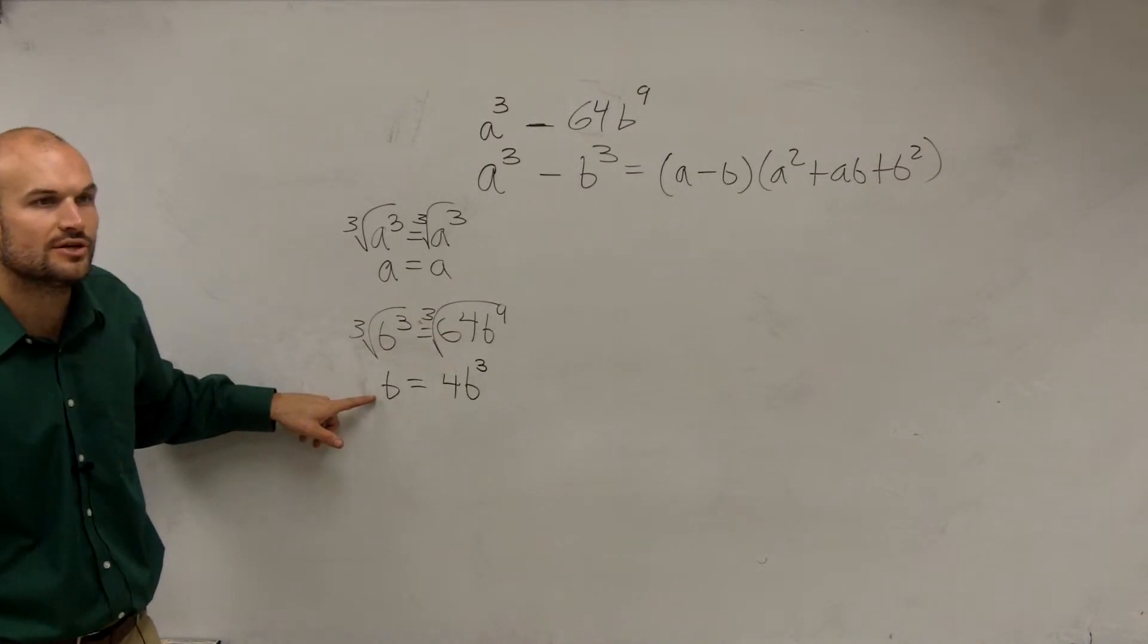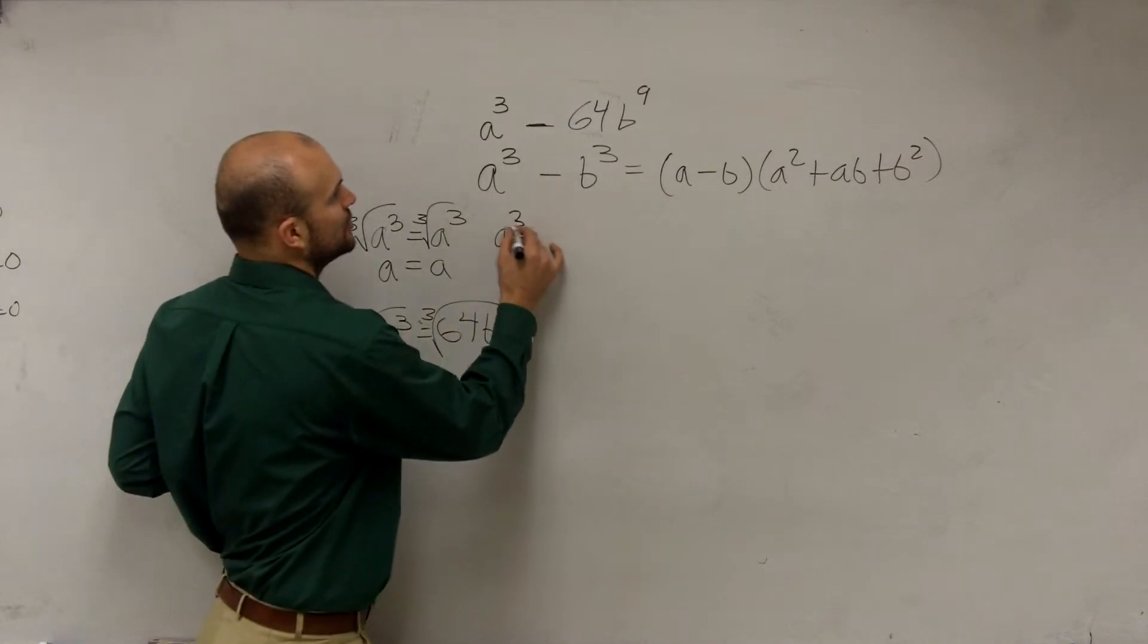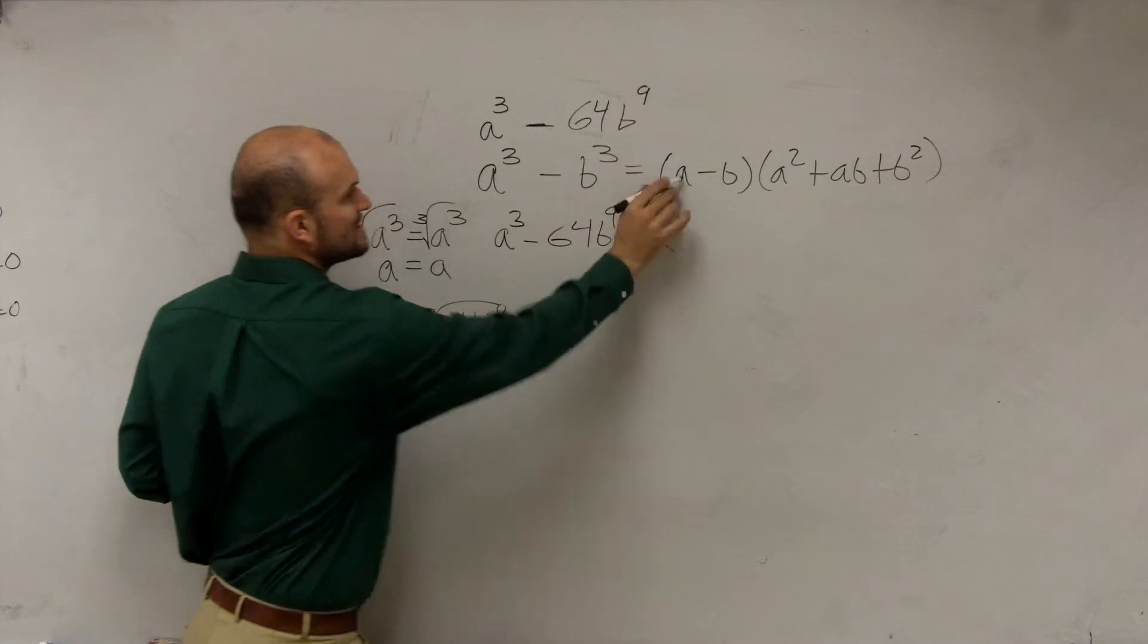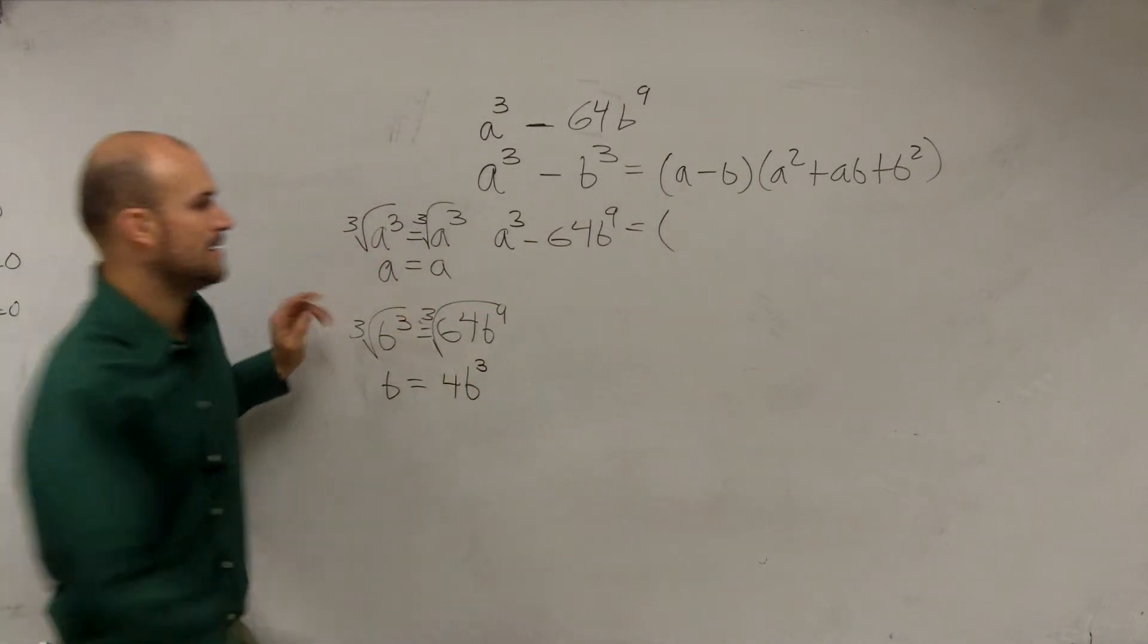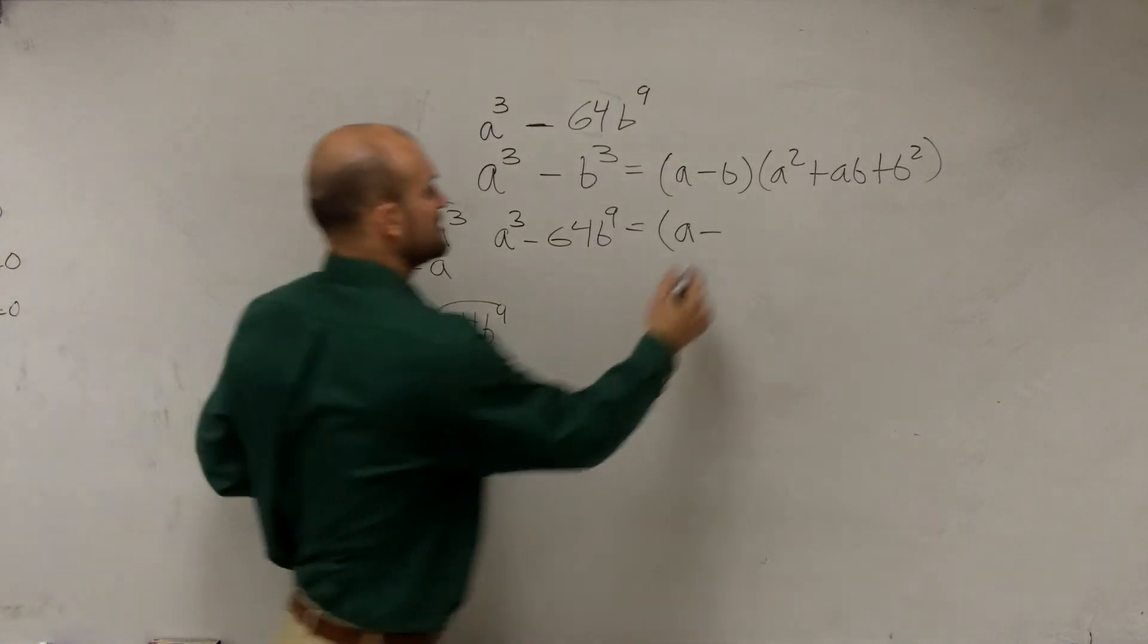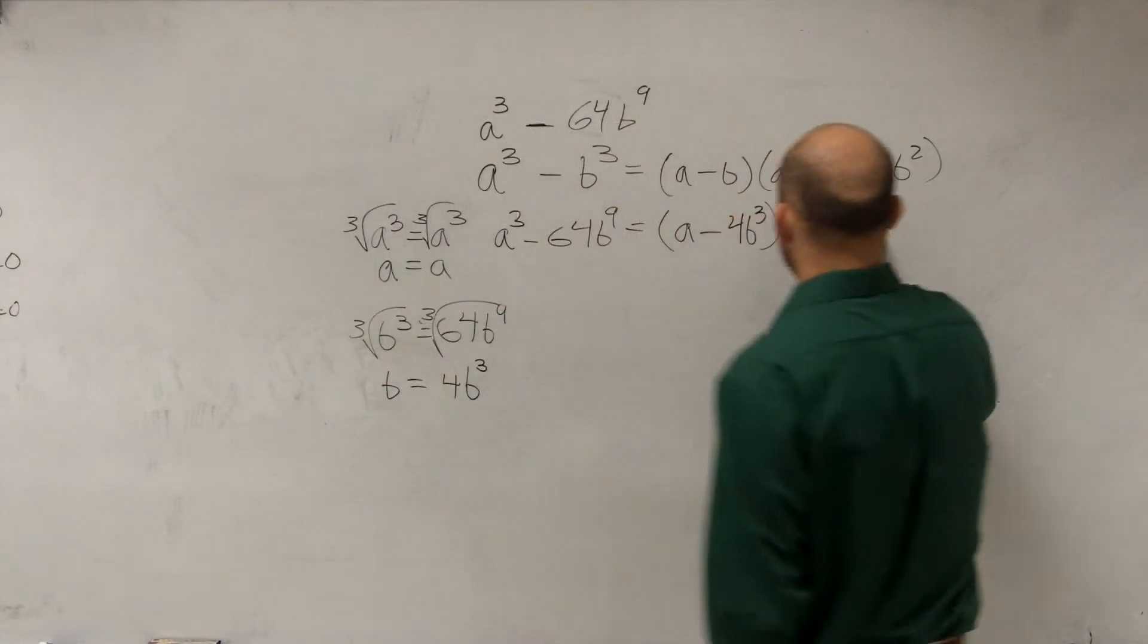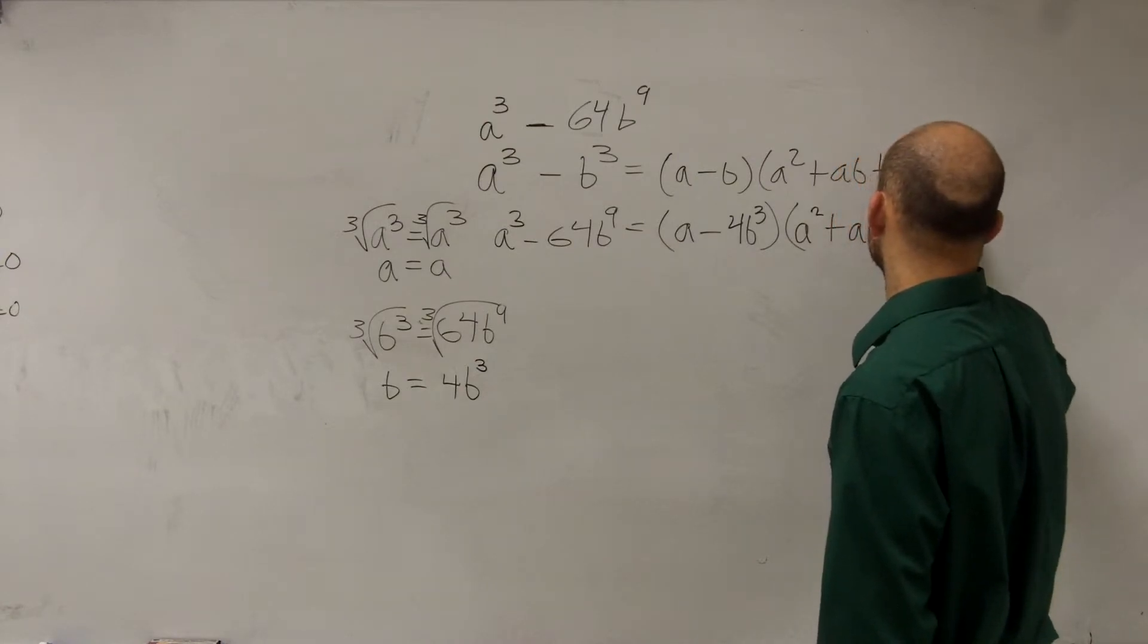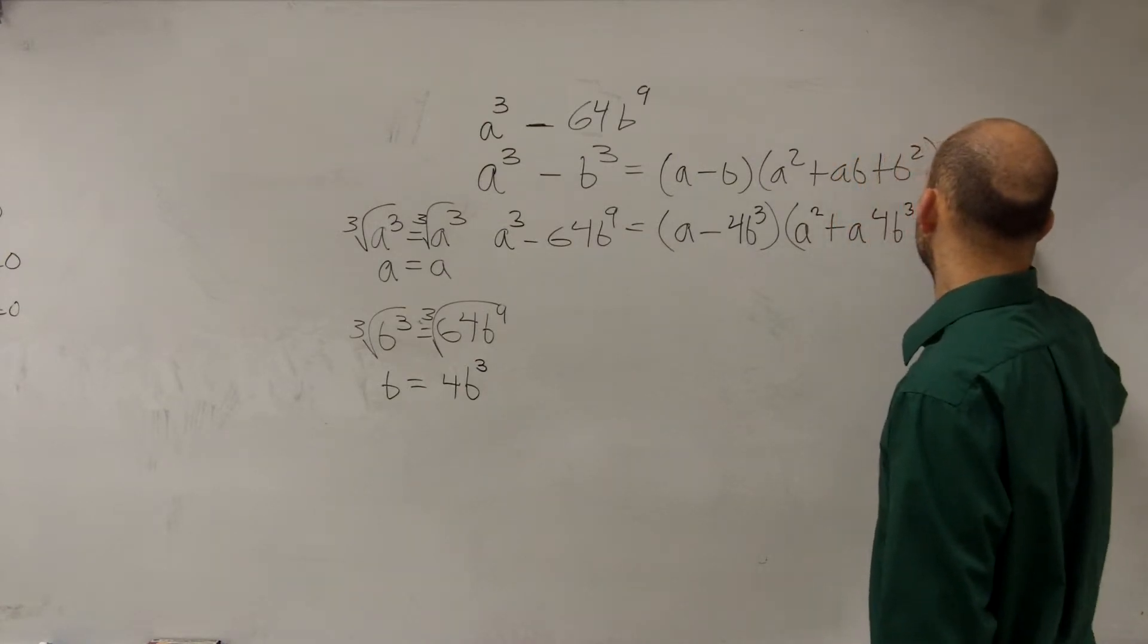So all I'm simply going to do is plug them into my formula. So I could say a cubed minus 64b to the ninth equals what's a? a is equal to a. Minus b. What is b? 4b cubed.